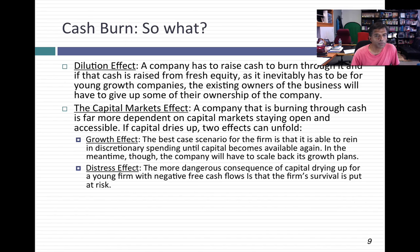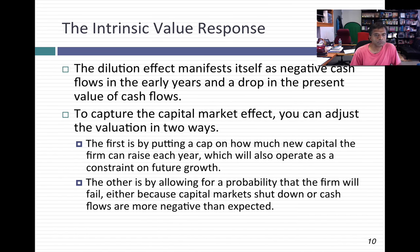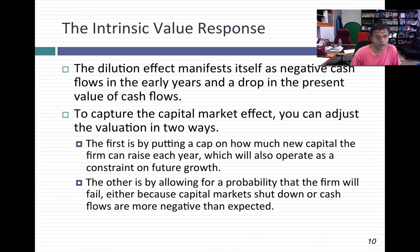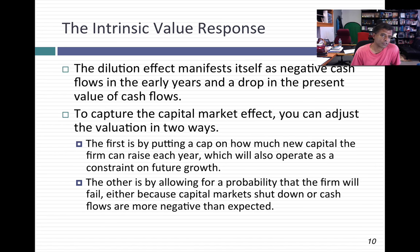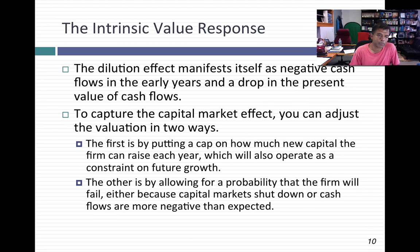Where does this show up in valuation? If you're doing intrinsic valuation, I know exactly where it shows up. Your negative cash flows — the source of your cash burn — put a damper on the value today. The present value of your negative cash flows will lower the value of your company today. You're, in effect, bringing the dilution effect into your value today. The capital market effect you've got to work a little harder to show. One way: you can put a cap on how much new capital your company will be able to raise, as a way of keeping a constraint on being too dependent on capital markets. If you do that, you also have to lower your growth rate.